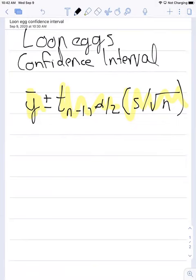We've got some data already from the Loon eggs. Let's calculate the confidence interval. 0.54 was our mean value.